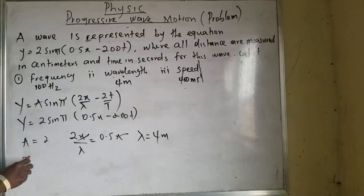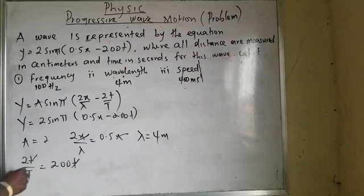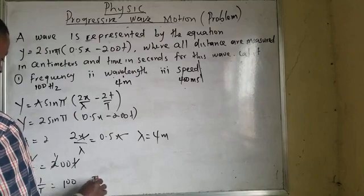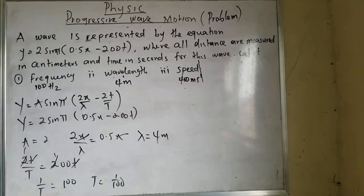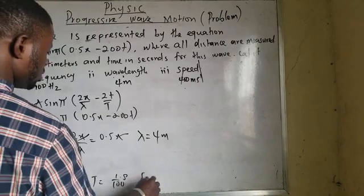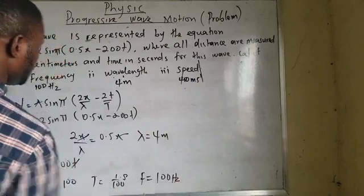Since I have that, 2t over C, which is period, equals 200t. We cancel t. It means 1 over C equals 100. It means my C, which is my period, equals 1 divided by 100 — that is correct — which is 0.01 seconds. I can now find my frequency, which will be equals to 100 Hz — just the inverse of the period.